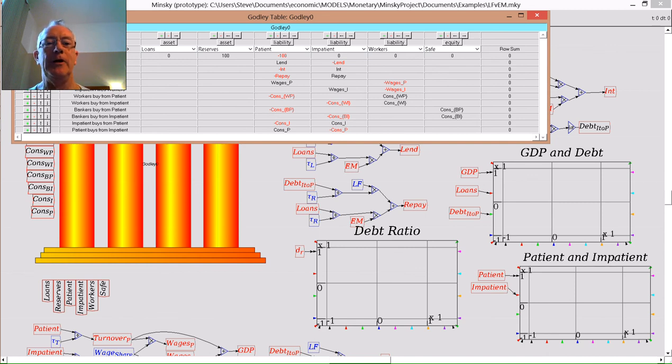Then we have lending from the patient agent to the impatient agent. The impatient agent then pays interest on the loans and also repays the loans. The patient agent hires workers, the impatient agent does the same. The workers consume from both the patient and impatient agents.